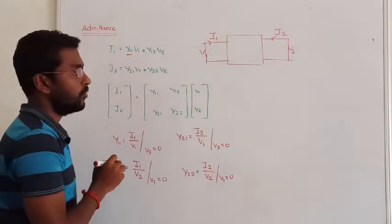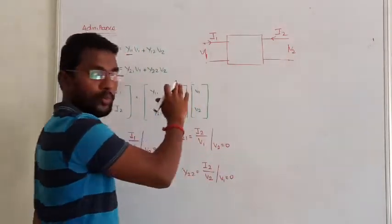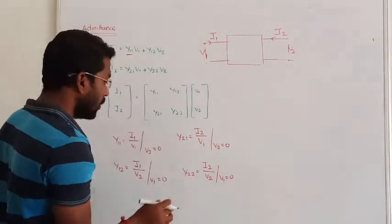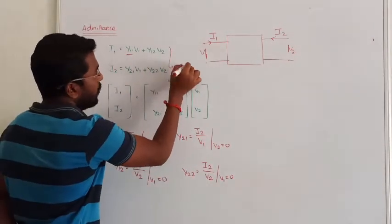So these are called short circuit parameters. Admittance parameters are called short circuit parameters.